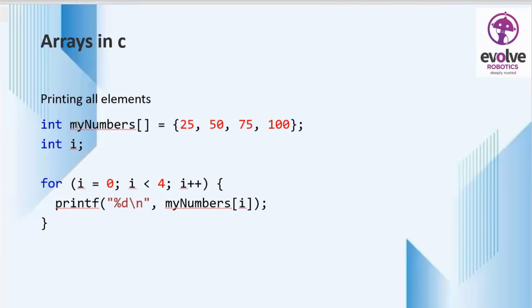For printing all elements in an array we are using a for loop. So here we can see the array and we are declaring a variable i. For printing the elements we are using a for loop. So i equals 0, i less than 4, and i plus plus.